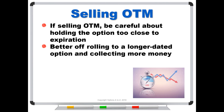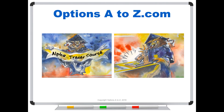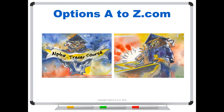You'll also end up with a larger downside hedge. For those who'd like to learn more about the art and science of options trading, please check out the Alpha Trader course and Strategy Lab at OptionsAtoZ.com. Also please join us on the Facebook trading group Options A to Z — you can find a link in the description below.